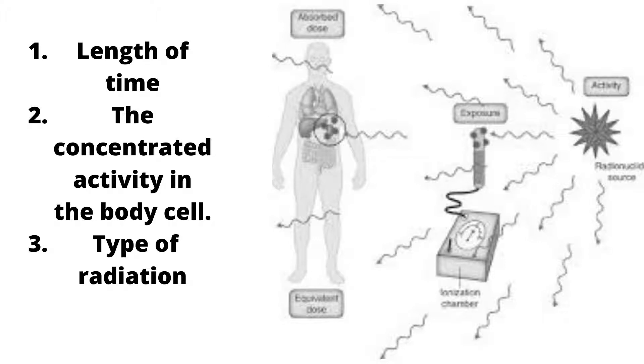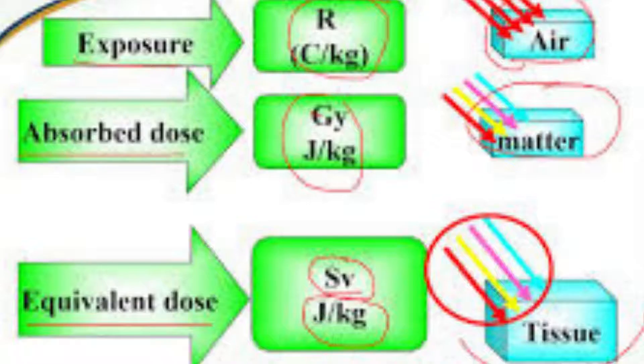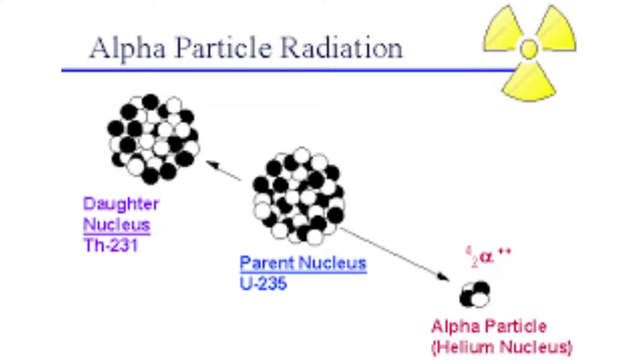If the quantity of radiation is concentrated in 10 kg, that is more dangerous than if it is spread across 1000 kg. Alpha radiation is more dangerous to health than beta radiation.